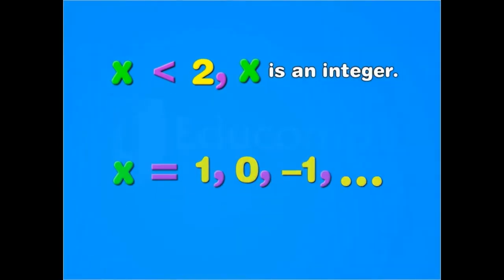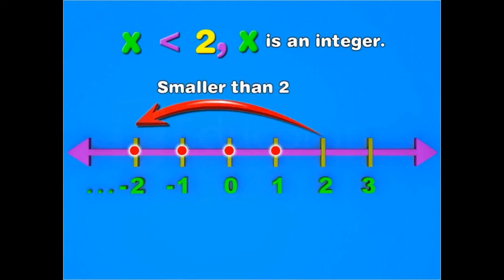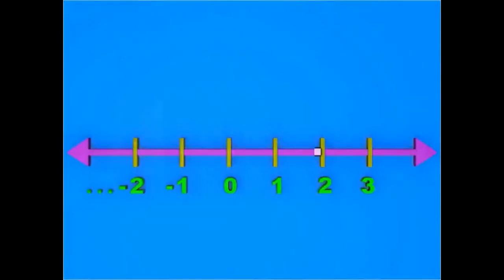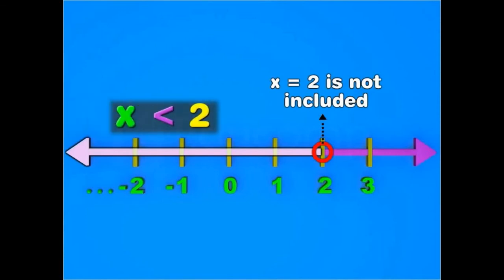To show this inequation on a number line, mark the integers to the left of 2 by dark dots, because all the numbers to the left of 2 are smaller than 2. Now, shade the number line to the left of 2. Also, make an open circle at 2 to show that 2 has not been included in the shaded part. The shaded part of the number line shows the inequation x is less than 2.